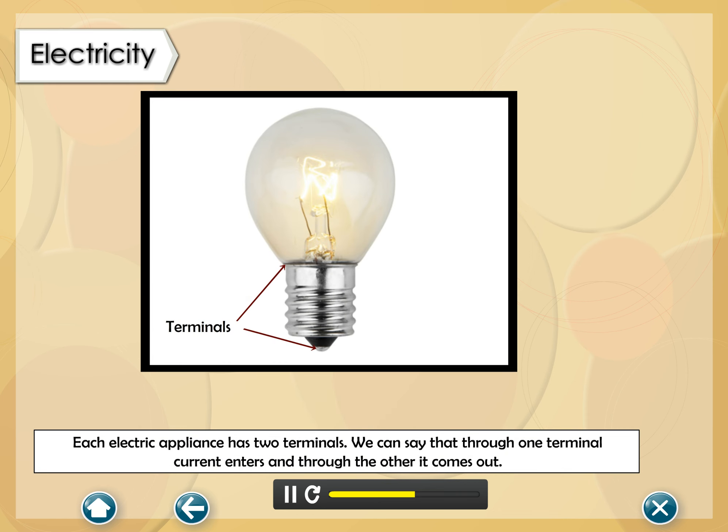Each electric appliance has two terminals. We can say that through one terminal, current enters and through the other, it comes out.